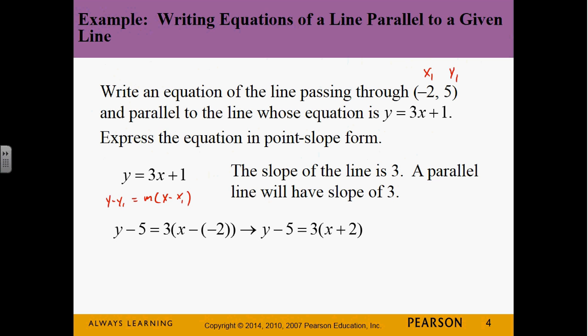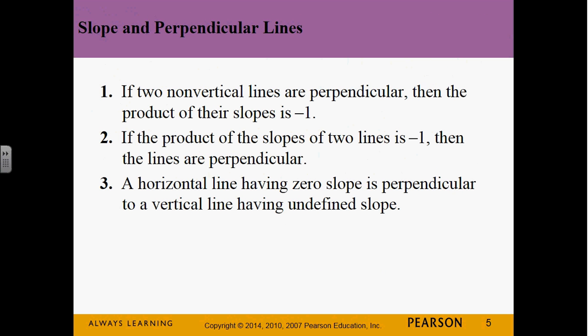It asks for point-slope form, so we're done. We don't have to take it any further. Now what if it said put it in slope-intercept form? What would I do? Distribute the 3, add 5 to both sides, get y by itself. We want y equals mx plus b, so that's really all we would do. That's parallel lines.